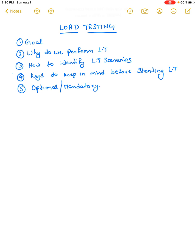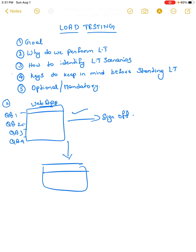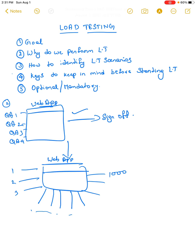Now why do we have to perform it? Let's take an example. You are a QA engineer working on testing a web application. There might be two or three QAs involved to test this application. You are all testing it, and once you functionally test it and you are confident that it is working as expected, you would provide your sign-off. Once you sign off, the application will be rolled out to production.